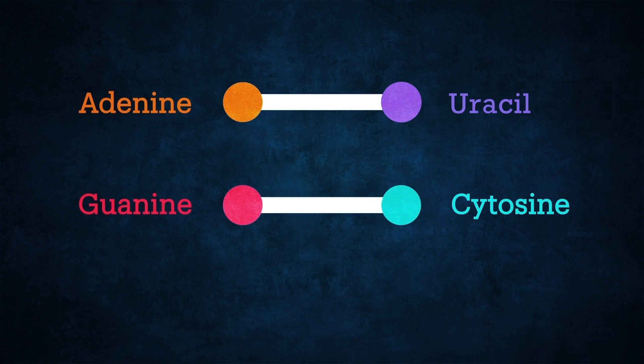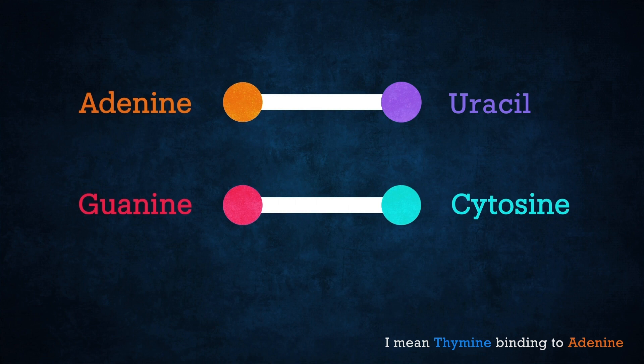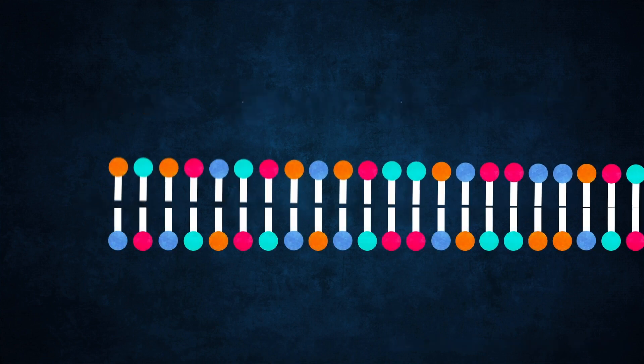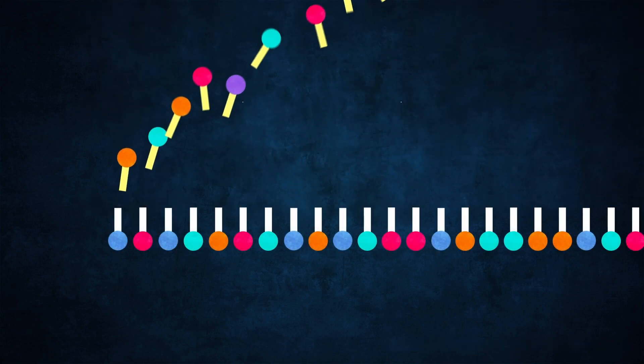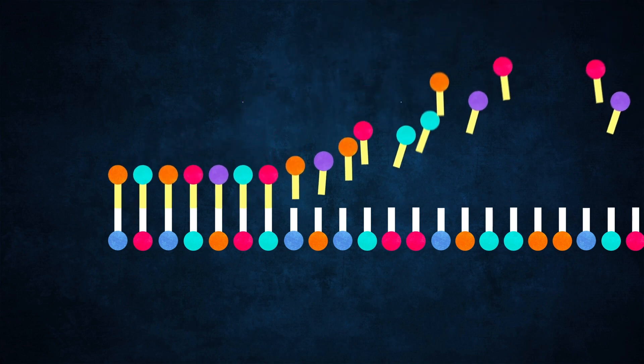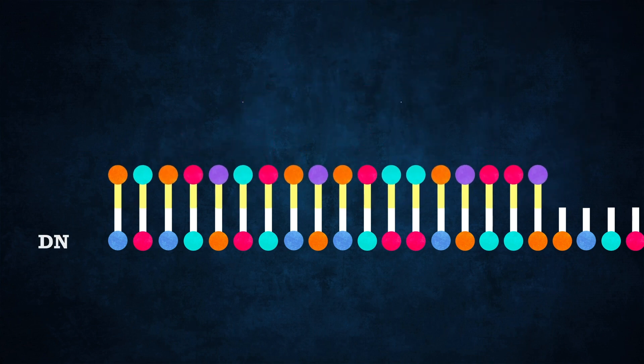The same pairing rules apply, but instead of thymine binding to cytosine, uracil binds instead. In order to make RNA, the DNA unzips its double helix and exposes its bases. RNA bases can then bind to the exposed bases and make their own RNA strands which are a complementary sequence to the DNA.